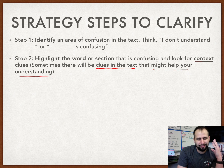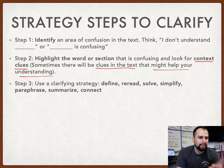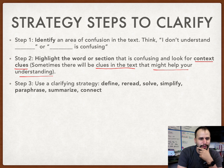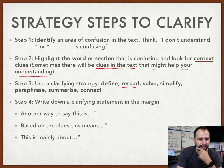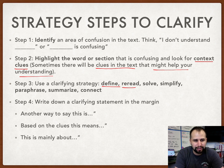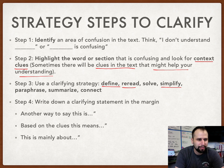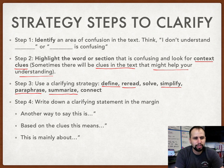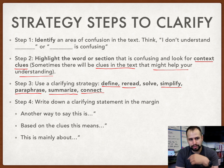Once you've identified and highlighted the section you're confused about, you need to use one of these strategies. You could reread the text, simply define the word or phrase you're not familiar with, simplify what you're reading and try to paraphrase or summarize it into fewer words, or try to make a connection to the outside world.